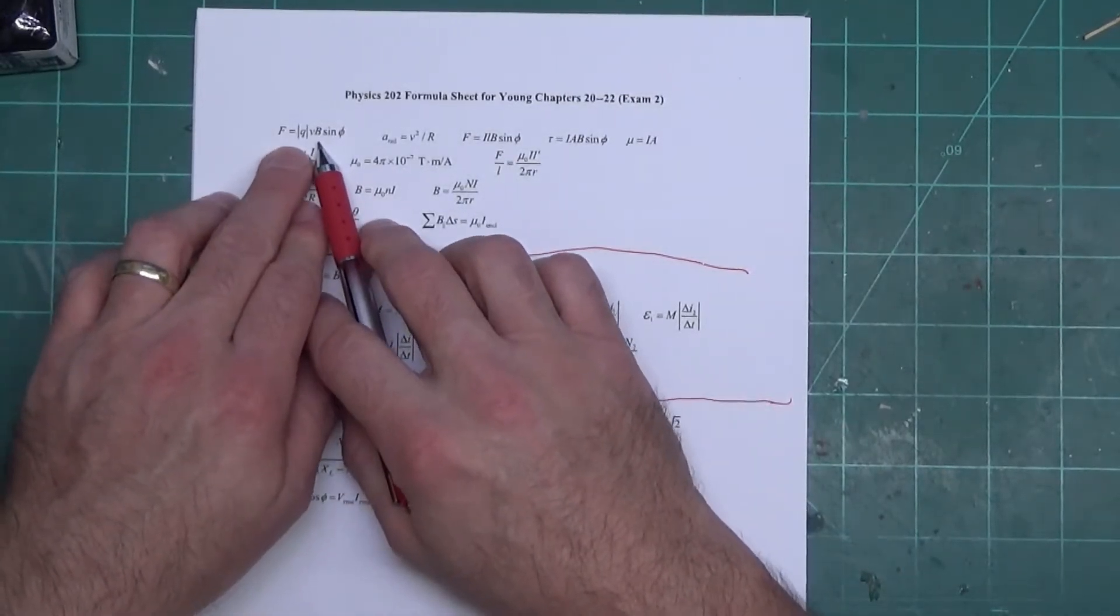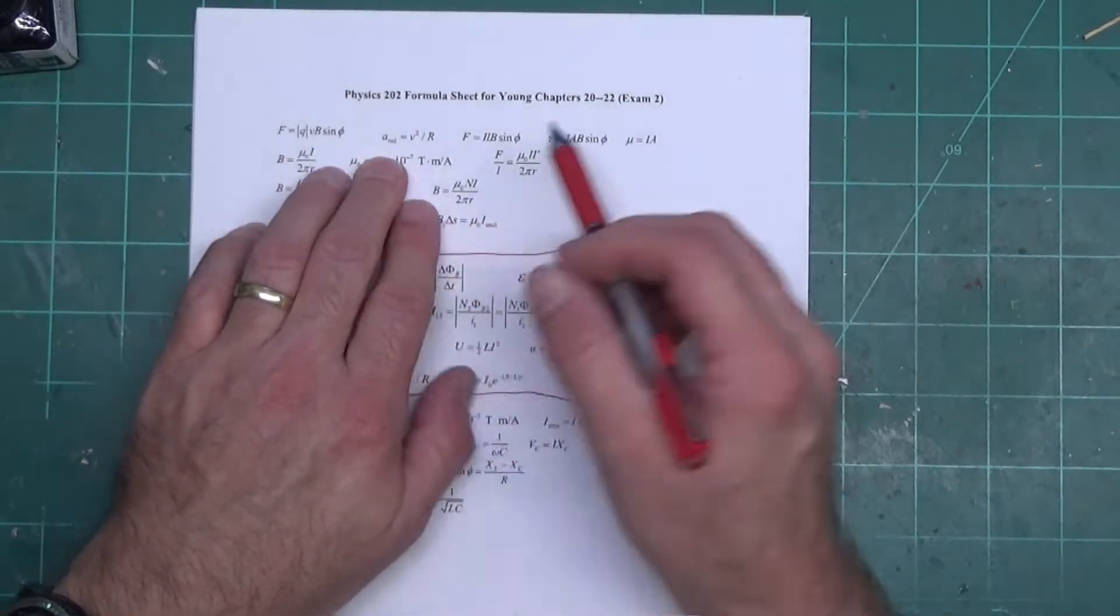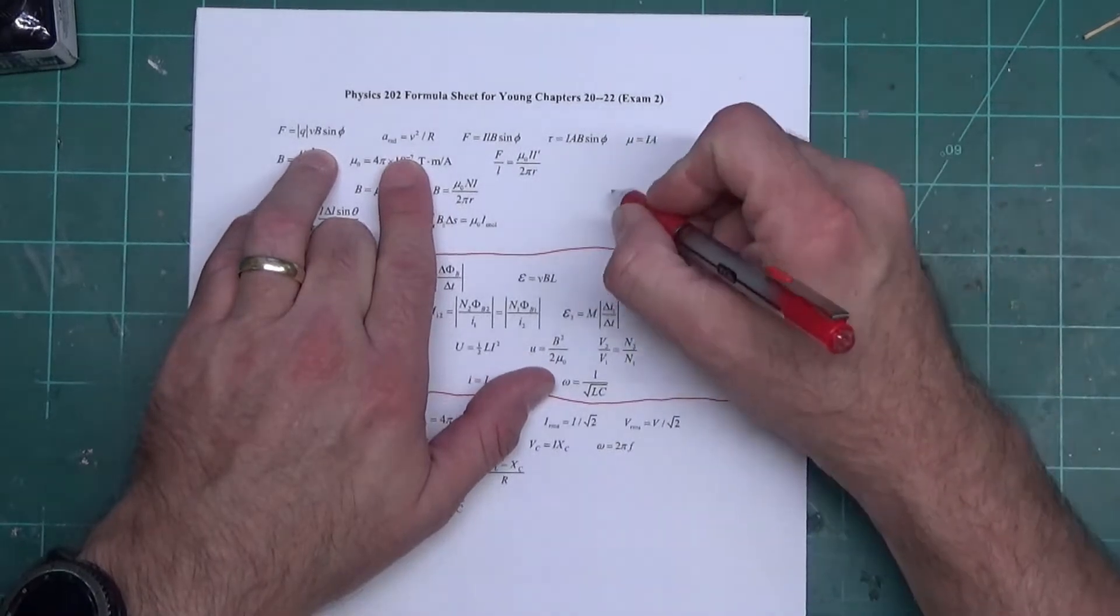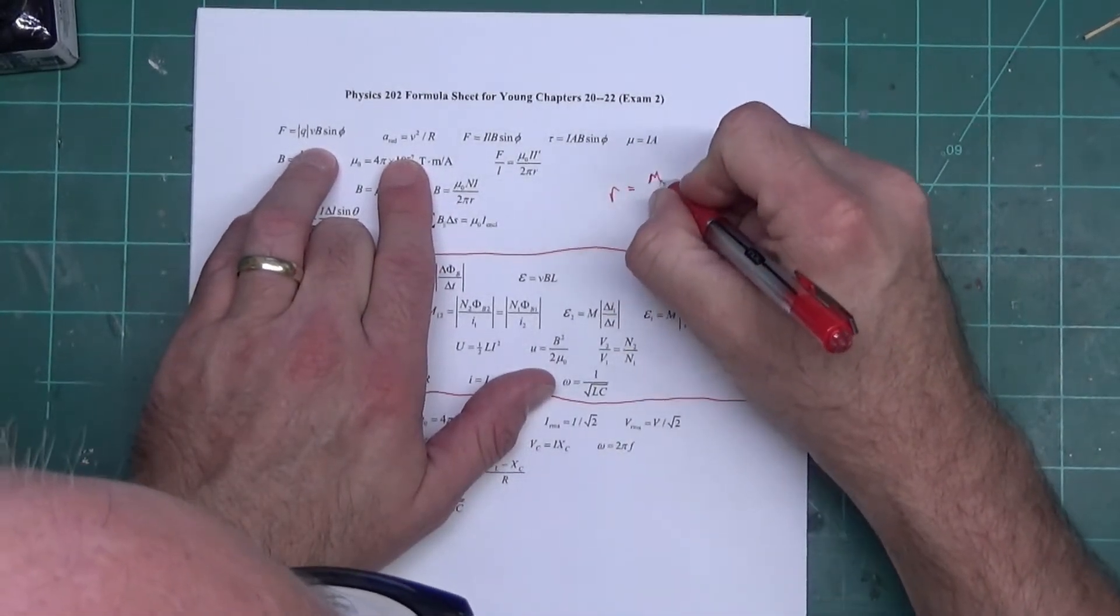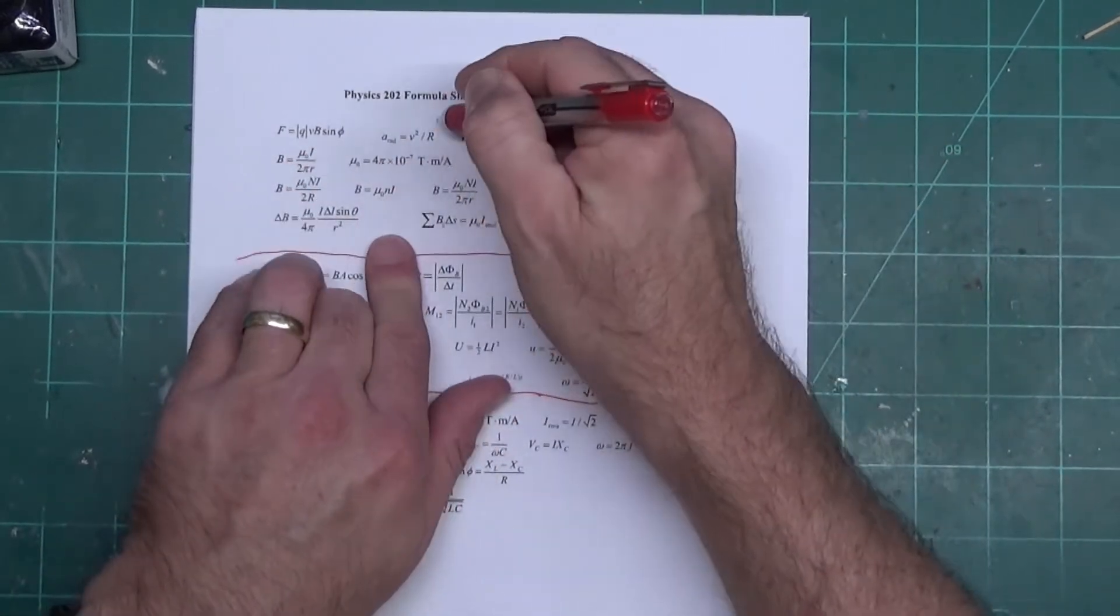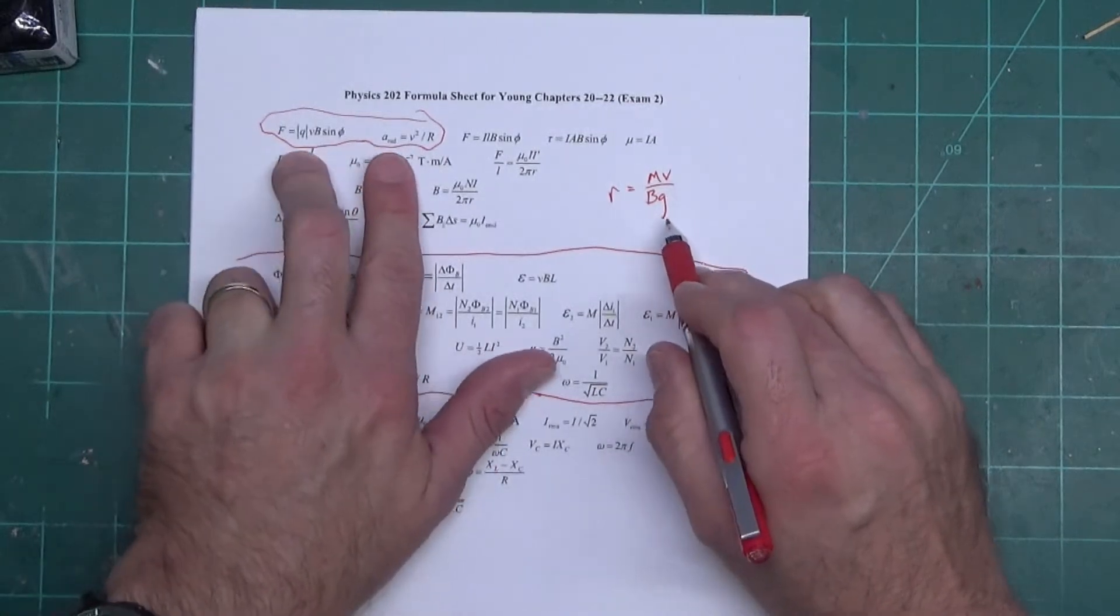This is centripetal acceleration. There's an equation missing - it's R equals MV over BQ. He has these two here. You can get this equation by putting these two together, but I don't get why he does that.